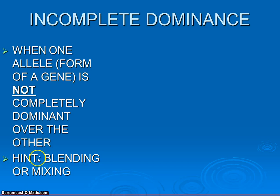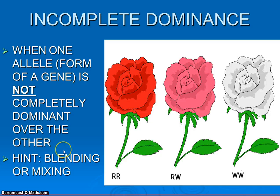We can use a simple example here in flowers again. Notice that one of the best ways to think of this is blending or mixing. If we go with our flower colors, this is a famous example — snapdragon flowers are a great example. Notice that for flowers that have two red alleles, obviously the flower comes out red. The flower that would have two white alleles for flower color obviously comes out white.